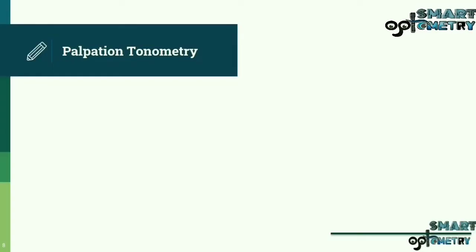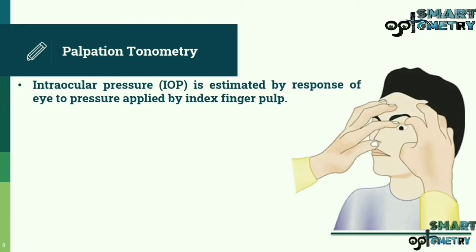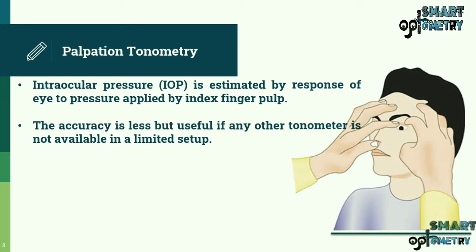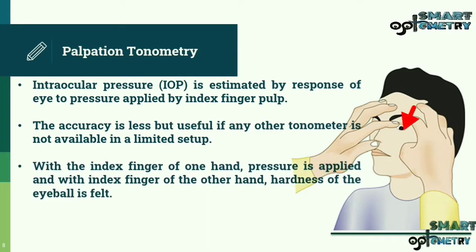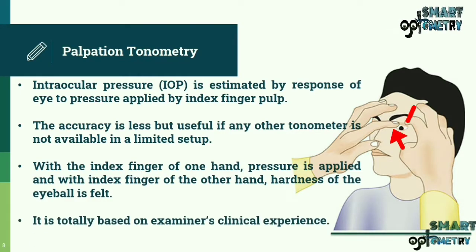Palpation tonometry: intraocular pressure is estimated by the response of the eye to pressure applied by the index finger pulp. The accuracy is less, but it is useful if no other tonometer is available in a limited setup. With the index finger of one hand, pressure is applied, and with the index finger of the other hand, the hardness of the eyeball is felt. It is totally based on the examiner's clinical experience.